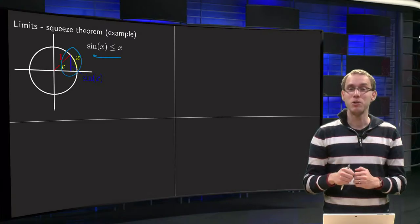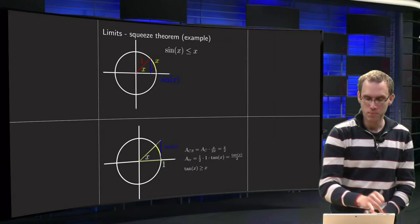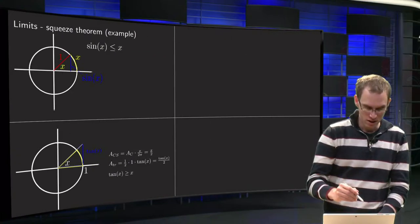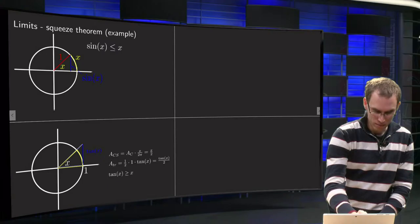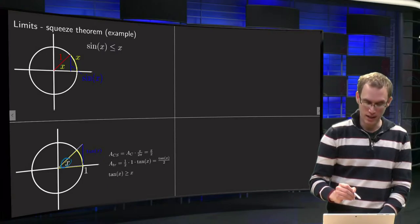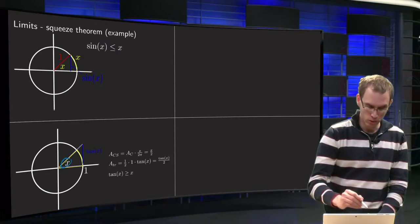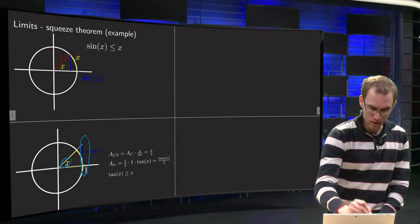Now we can do a similar trick with the same picture, but now we make it slightly different. We again have our angle x in radians and then we draw a line here going up.